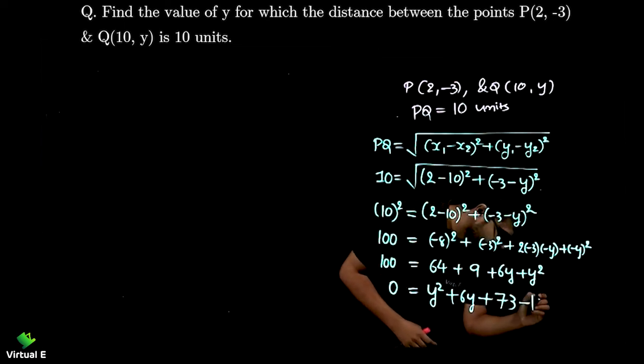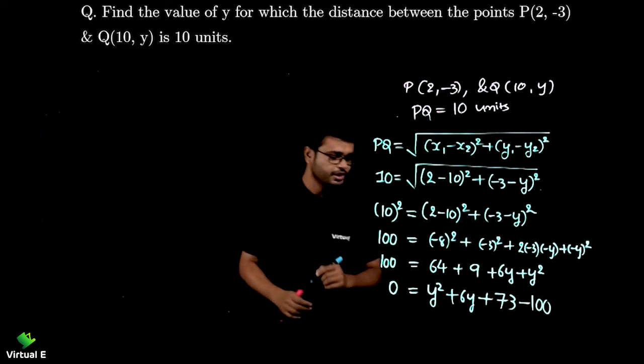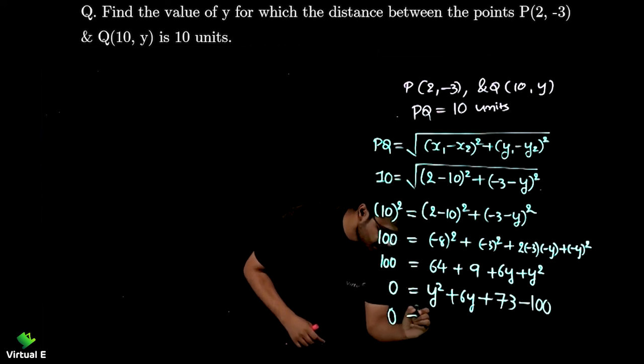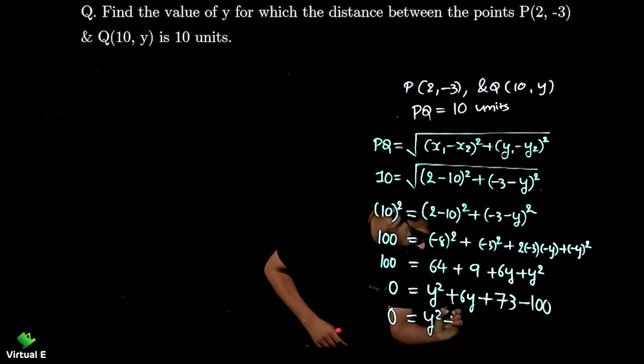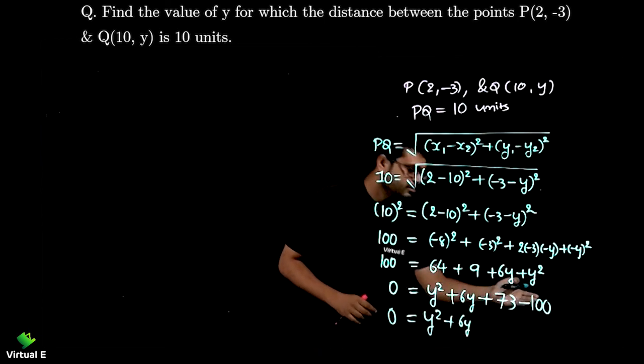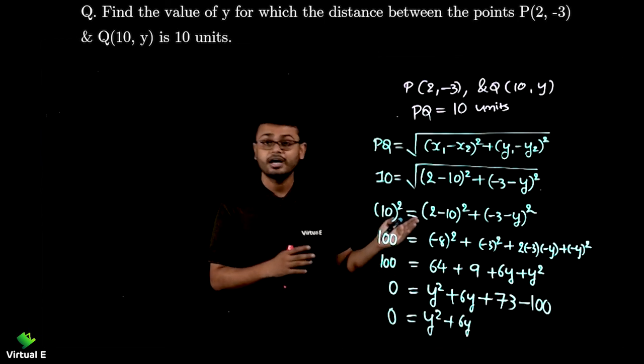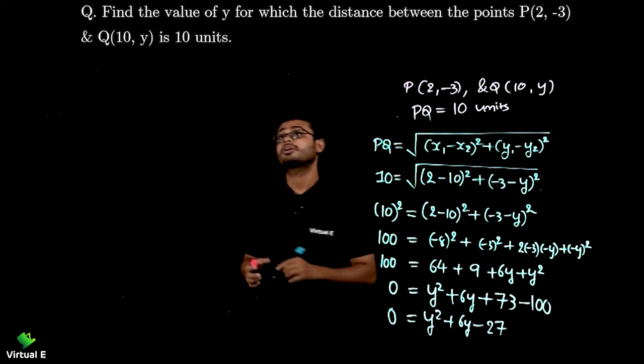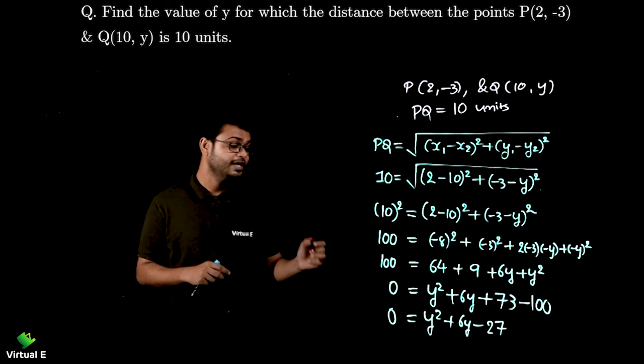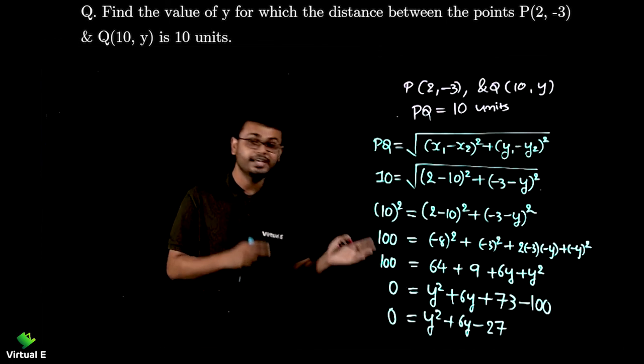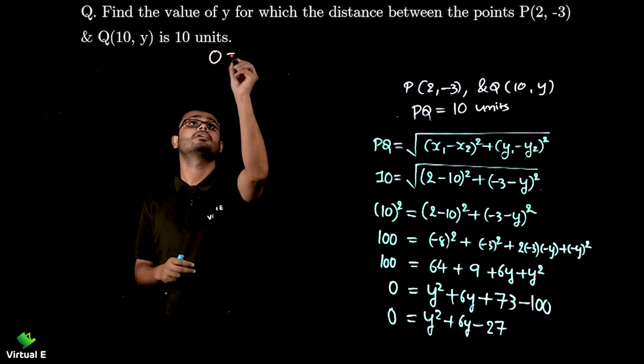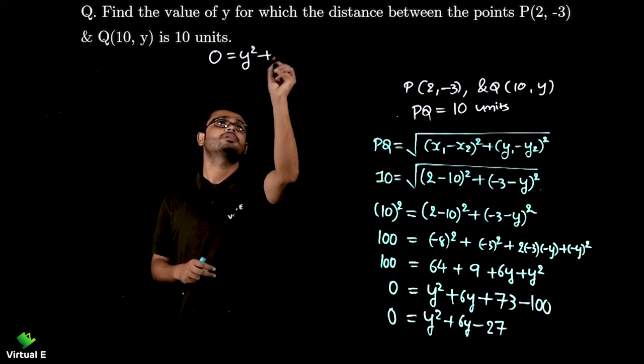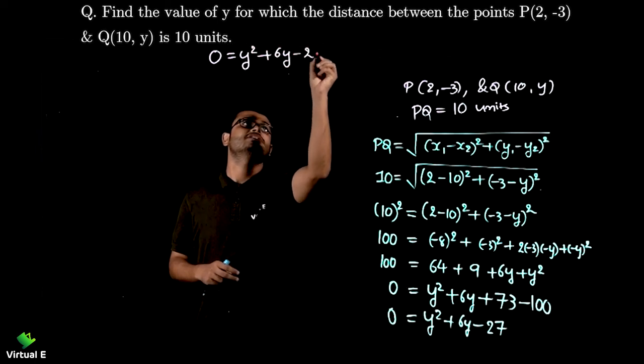Yes 73, and one more thing don't forget that 100 we are shifting over that side. So it will become -100. So let's simplify further. 0 is equal to y² + 6y and what's the answer 73 - 100 that is -27. So we have quadratic equation with us again in this chapter.